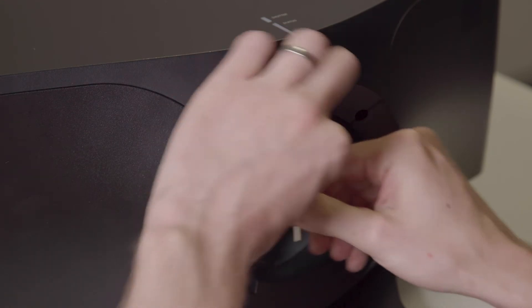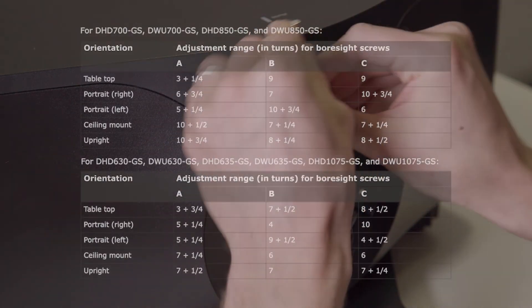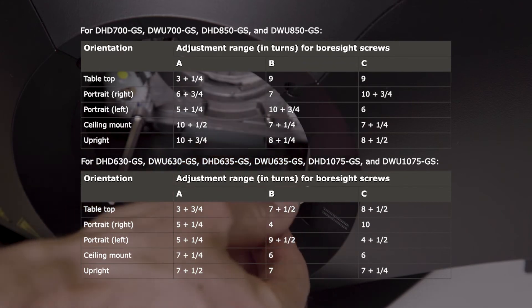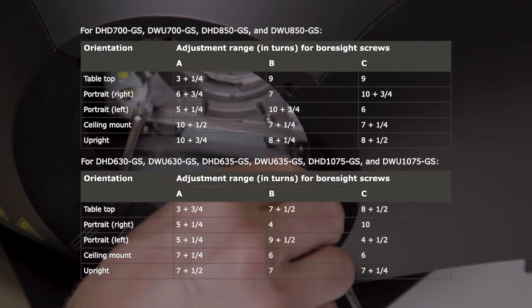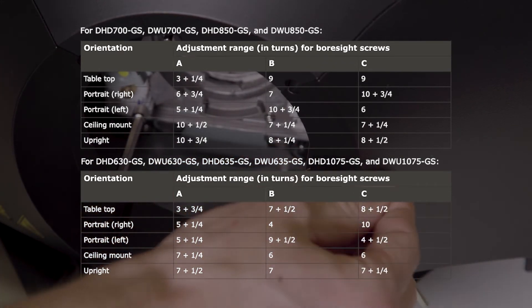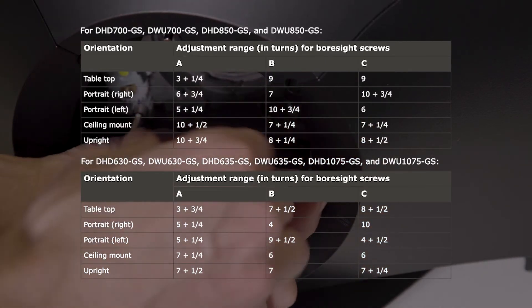Adjust the borsite to the recommended ranges based on your projector's final orientation. Use the table shown on screen or see the UST install manual for full details. Once calibrated you can now install the UST lens.